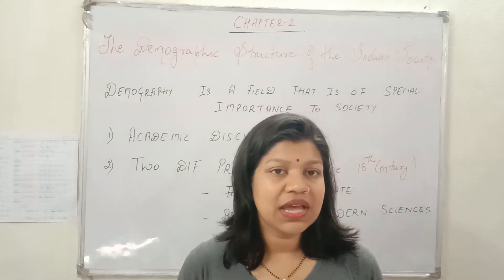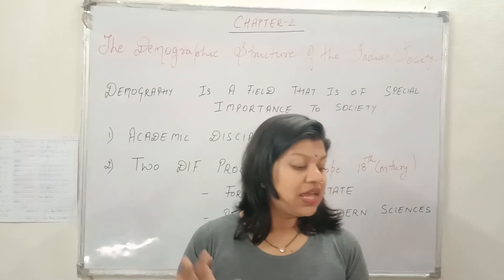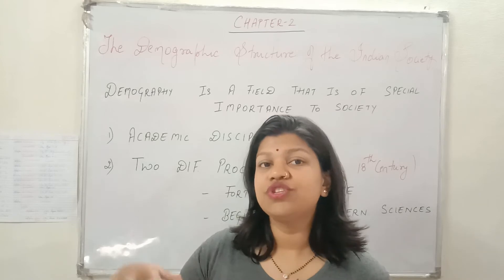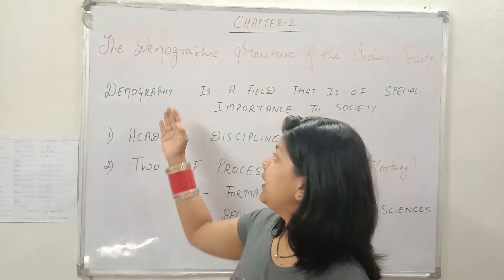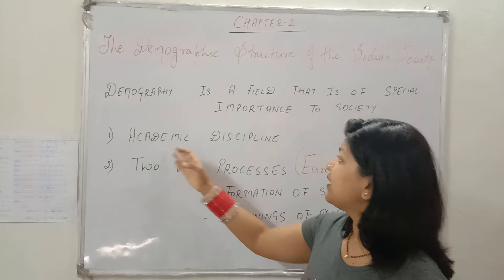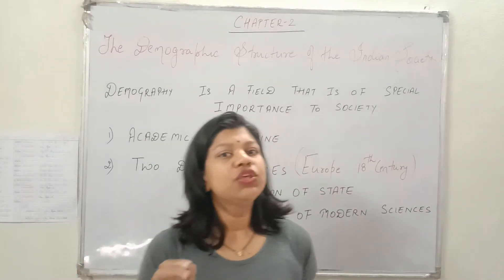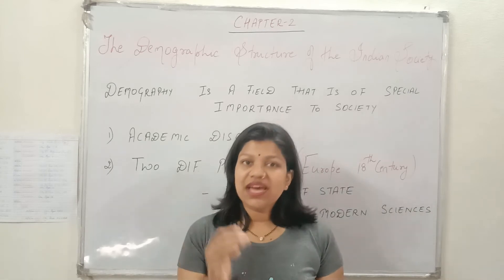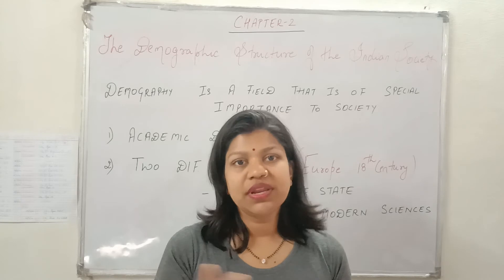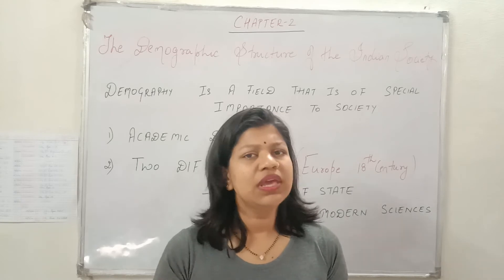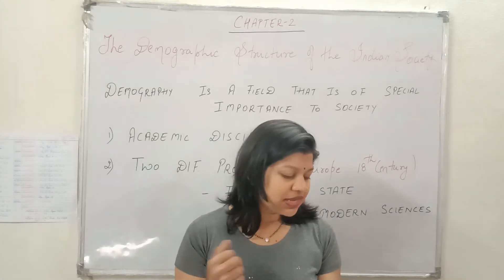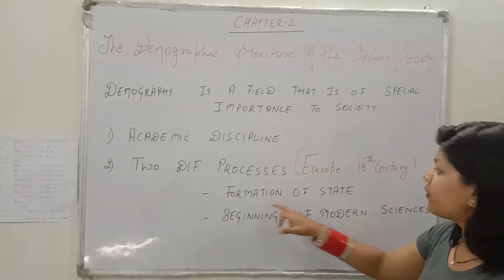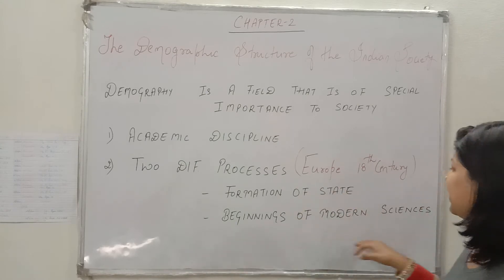An academic discipline is a study and research that we know, learn, and research. Demography is an academic discipline in society because we research and find out what problems exist among people, what the statistics of people are, how many people have been born, how many have died, or whether there is an epidemic or disease. It is having two different processes: first is the Formation of State, and second is the Beginning of Modern Sciences.